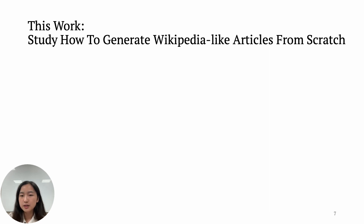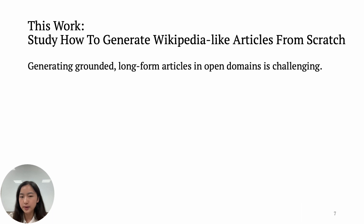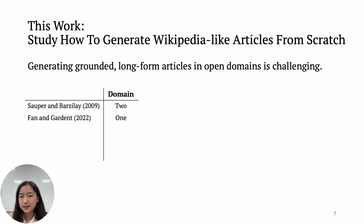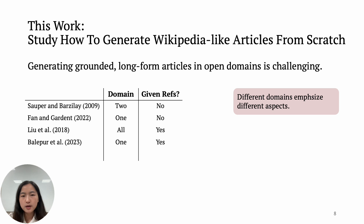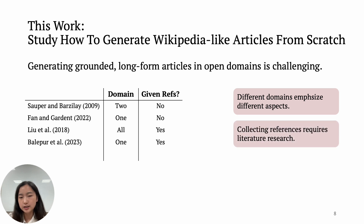However, generating grounded long-form articles in open domains is very challenging. More than a decade ago, researchers at MIT were already studying how to generate Wikipedia articles. However, they only focused on specific domains and used template-based methods. This won't work when moving to open domains, as different domains emphasize very different aspects. Some other works simplify the problem by assuming the references are already given. However, collecting references with good breadth and depth is challenging as it requires literature research, which is even hard for humans.